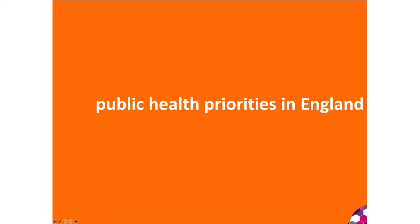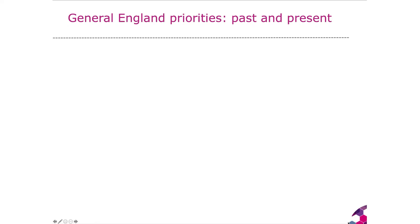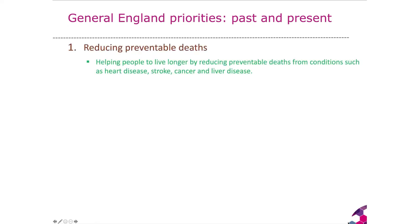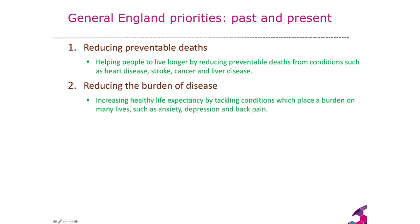Let's move on to what the public health priorities in England currently are and have been in the past. There have been four key areas of public health work. First, reducing preventable deaths — helping people to live longer by reducing the numbers of deaths from conditions such as heart disease, stroke, cancer and liver disease. Second, reducing the overall burden of disease and disability by increasing healthy life expectancy, tackling conditions such as anxiety, depression, back pain, musculoskeletal disorders and other chronic, though not fatal, illnesses.